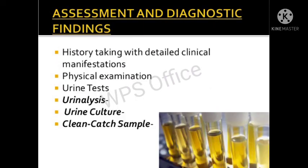Additional symptoms include strong-smelling urine and pelvic pain. For assessment and diagnostic findings, history taking and physical examination are performed. Urine tests including urinalysis, urine culture, and a clean-catch sample are done to check for elevated WBC or lymphocytes, color and pH of urine, and to identify what type of bacteria is attacking the patient's urinary system.